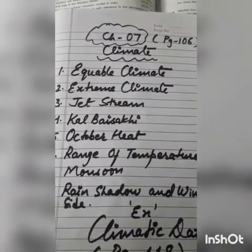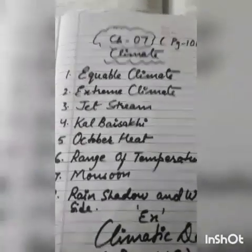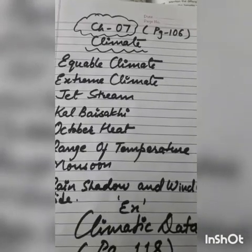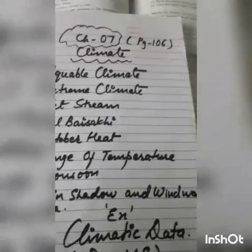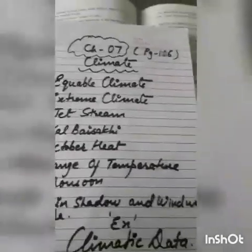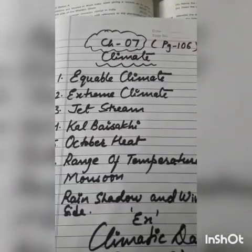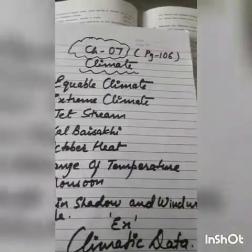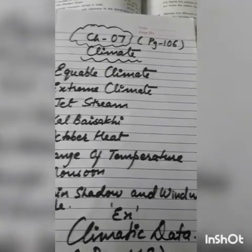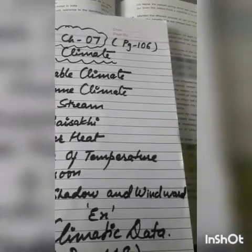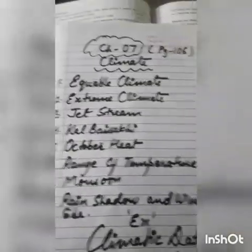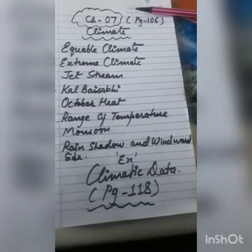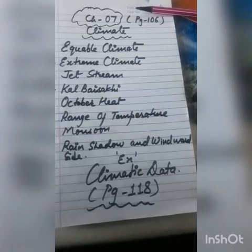Next are rain shadow and windward side. Rain shadow is the rainless area on the leeward side. Windward side means the side of the mountain where moisture-bearing winds strike and bring heavy rainfall. To summarize the difference: rain shadow area receives less rainfall or no rainfall, while the windward side of a mountain or hill is where moisture winds strike and bring heavy rainfall.